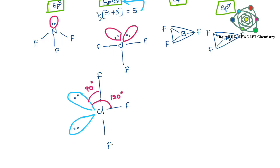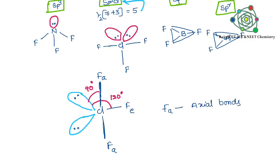The lone pair is at 90 degrees to the axial fluorines and 120 degrees to the equatorial fluorine. The axial fluorines are more affected by this lone pair repulsion, so the axial bond length is slightly higher than the chlorine-equatorial fluorine bond length. Therefore, ClF3 has unequal bond lengths.